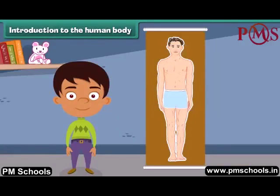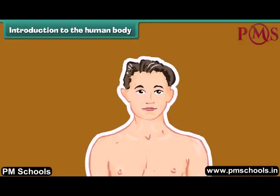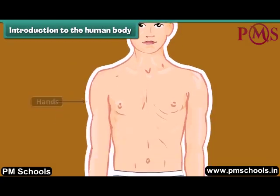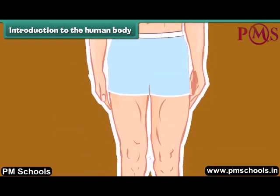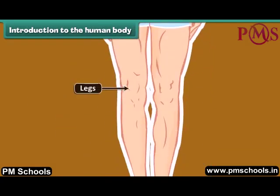Hello all, can anybody tell me the names of various parts of our body? The main parts of our body are head, face, neck, hands, stomach and legs.